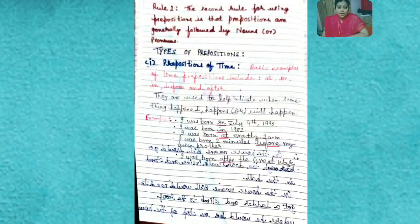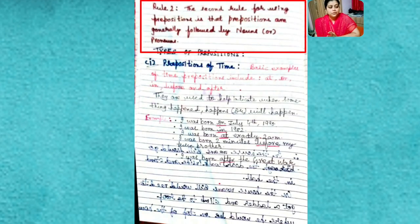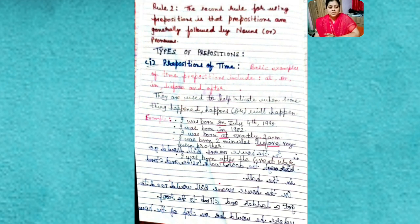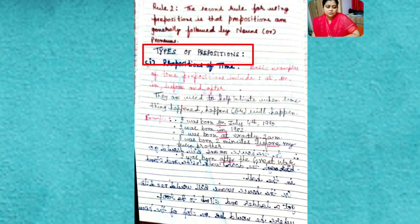Now listen to rule number two. The second rule for using prepositions is that prepositions are generally followed by nouns or pronouns. So we need to be really careful while using prepositions—where we are using 'in,' where we are using 'at,' where we are using 'on.' The same sentences: as you have seen in the first case I have used 'in,' the meaning was different. In the second case I used the same sentence, same character, but I replaced 'in' with 'on' and the meaning which generated was totally different. Now let me come to the next topic, which is types of prepositions.